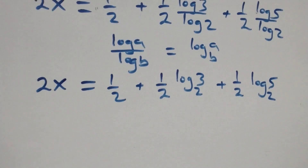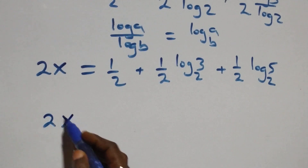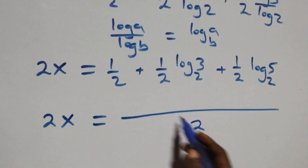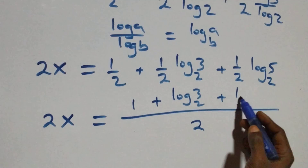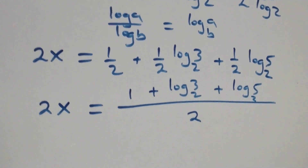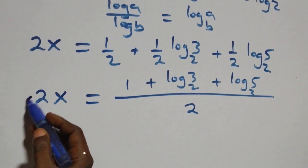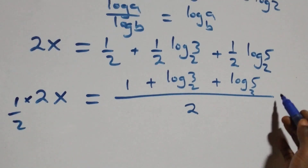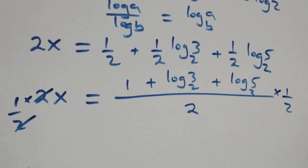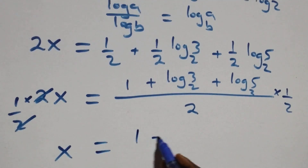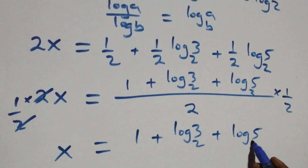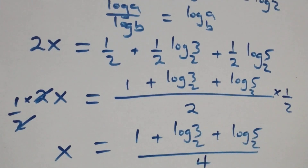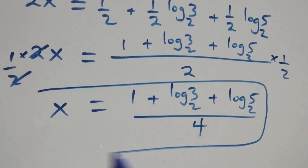We combine the right side as a single fraction over 2: two x equals one plus log base 2 of three plus log base 2 of five, all over two. Multiplying both sides by one half — so two cancels — we get x equals one plus log base 2 of three plus log base 2 of five, all over four.